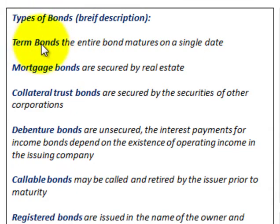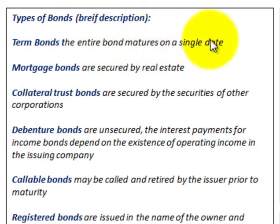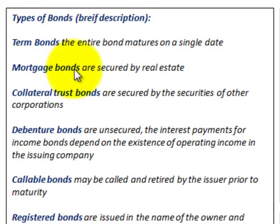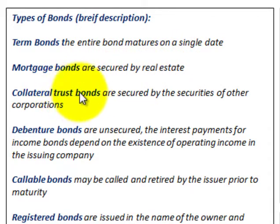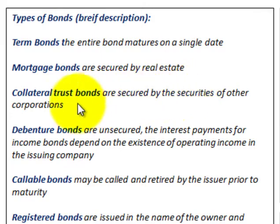Term bonds are where the entire bond matures on a single date. Mortgage bonds are secured by real estate. Collateral trust bonds are secured by the securities of other corporations.